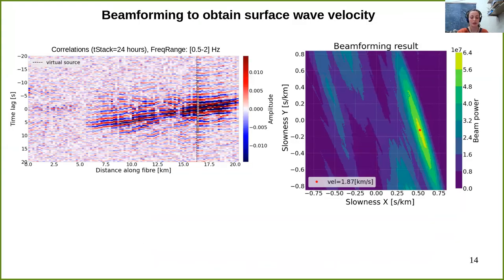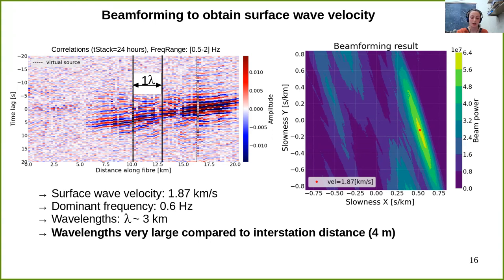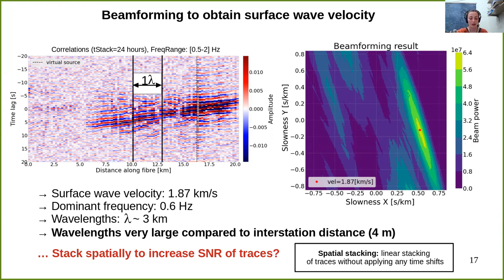To get an estimate of the surface wave velocity, we carried out beamforming. The velocity is 1.87 kilometers per second. As the surface waves have a dominant frequency of 0.6 Hz, we are dealing with wavelengths around 3 kilometers. Compared to the interstation distance of 4 meters, these wavelengths are very large, so adjacent traces on the fiber should see basically the same signal. Spatial stacking should cancel out the incoherent parts by destructive interference, thus improving the signal-to-noise ratio. Here, spatial stacking refers to the simple linear stacking of traces in space prior to the correlation procedure and without applying any time shifts.